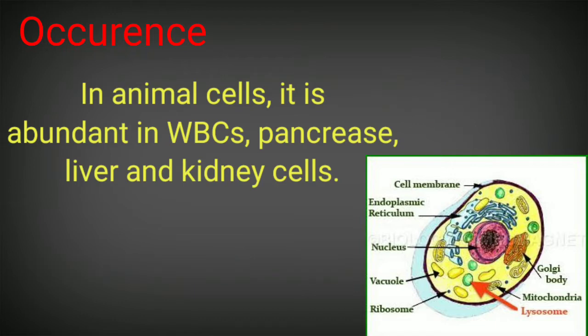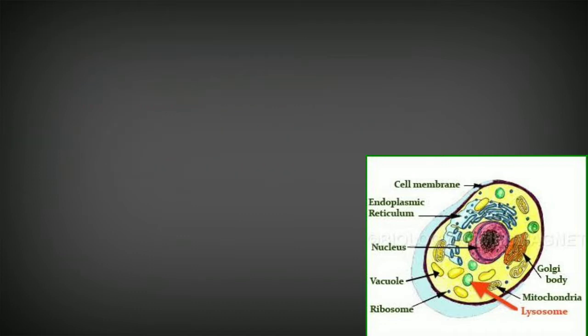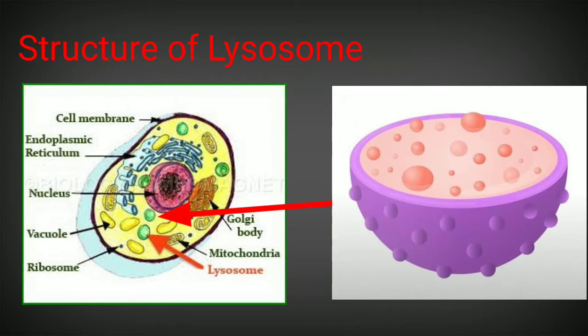The number of lysosomes may vary according to different types of cells. They are particularly more numerous in WBCs, macrophages, Kupffer cells, and secretory cells of the pancreas, spleen, liver, and kidney. The number varies depending upon the different type of cells or tissues.